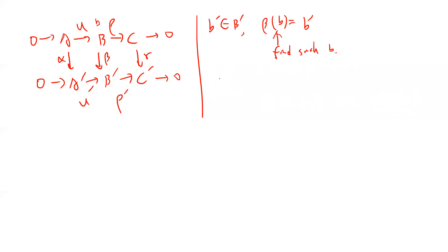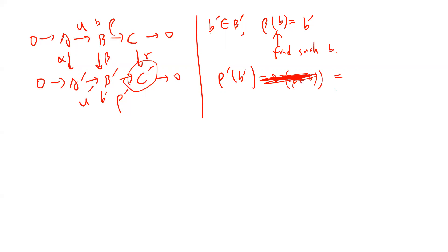We look at ρ'(b') which lands in C'. Since γ is an isomorphism, there exists c in C such that γ(c) = ρ'(b'). Since ρ is surjective (the top sequence is short exact and exact at C), there exists b in B such that ρ(b) = c.